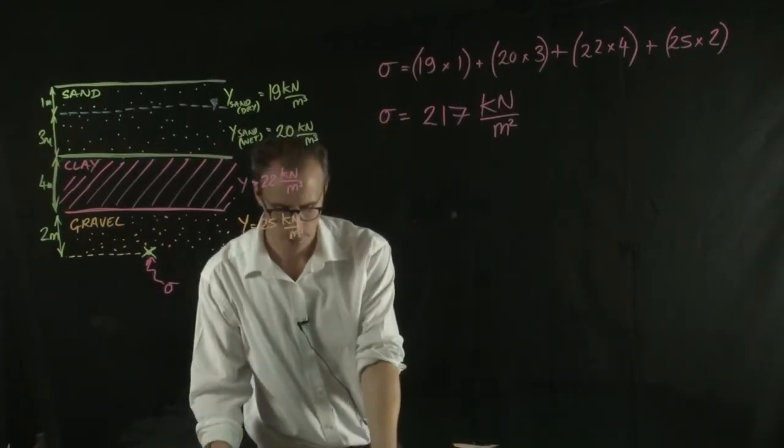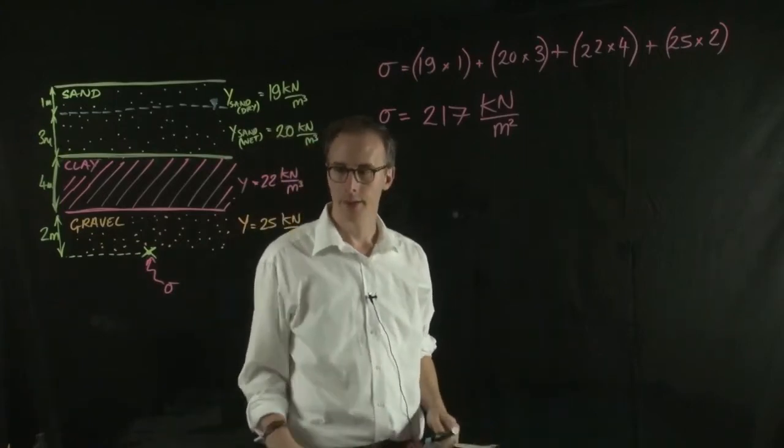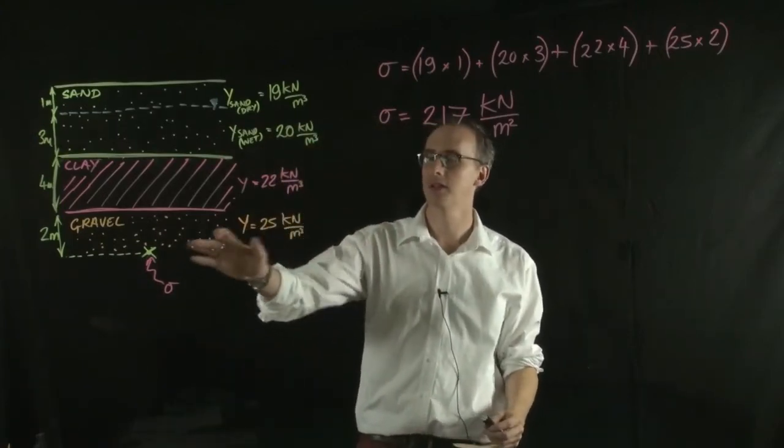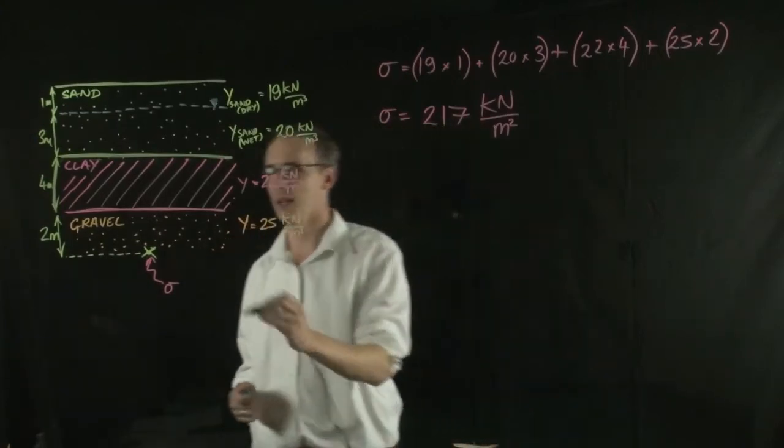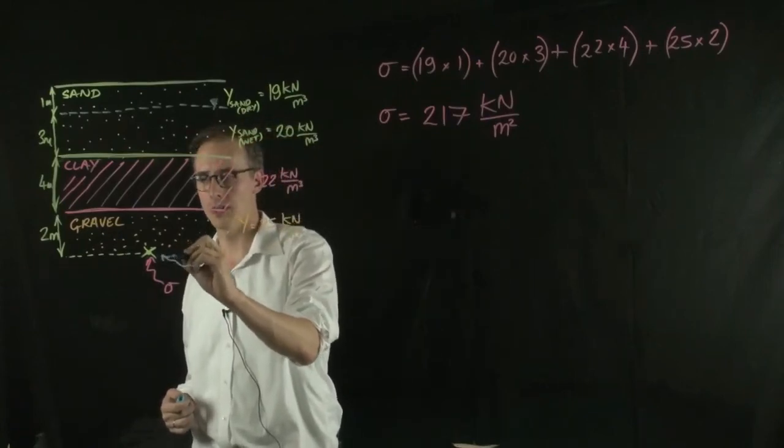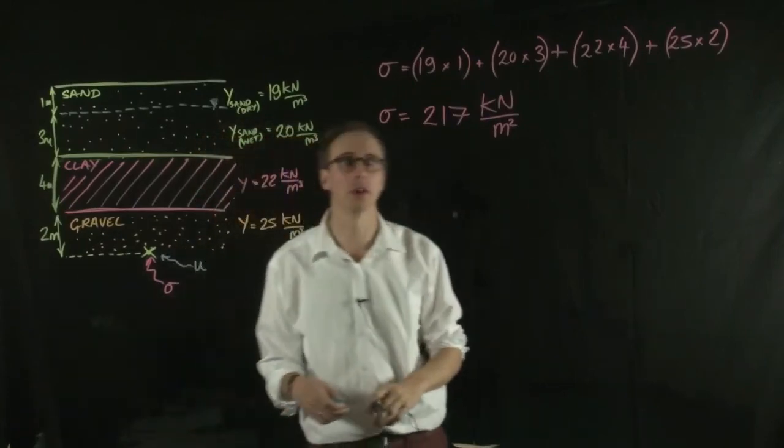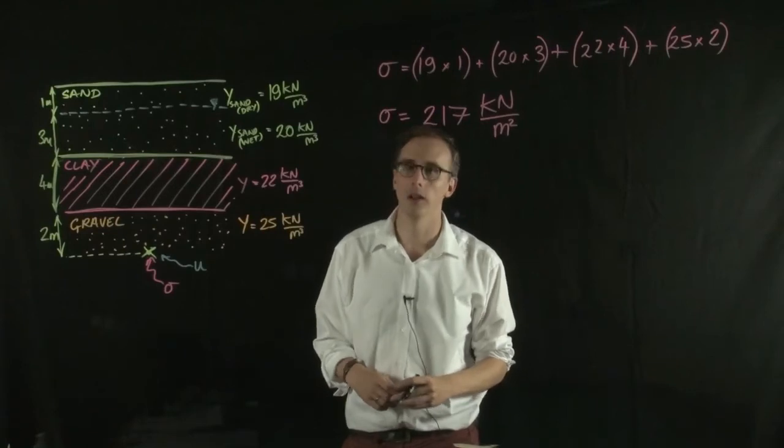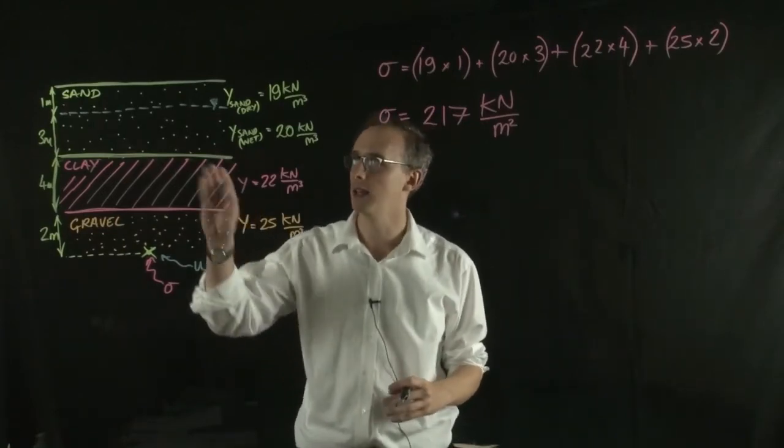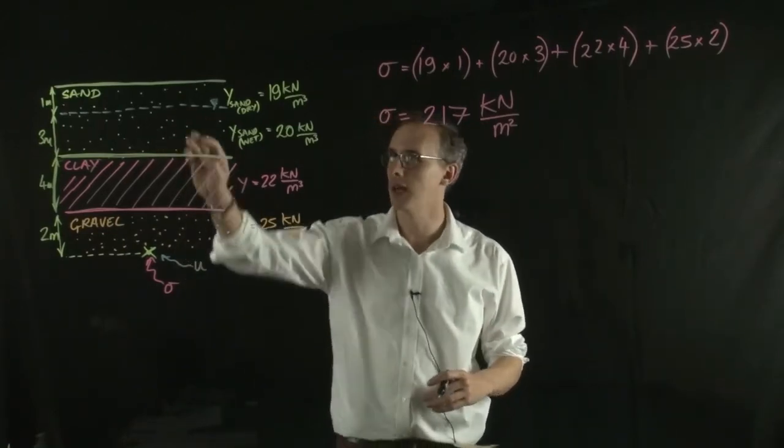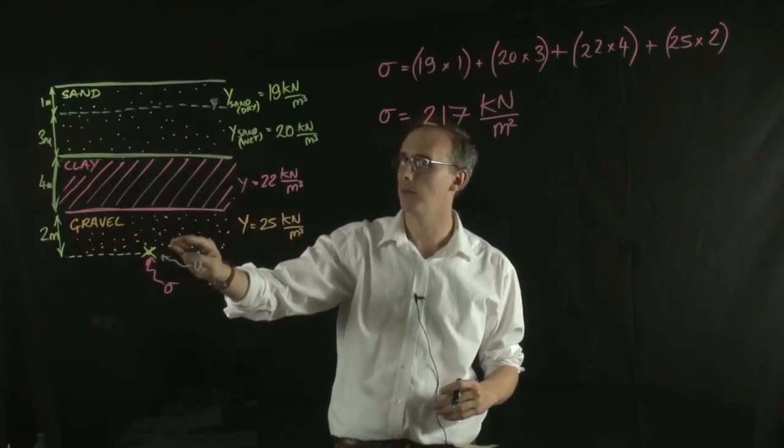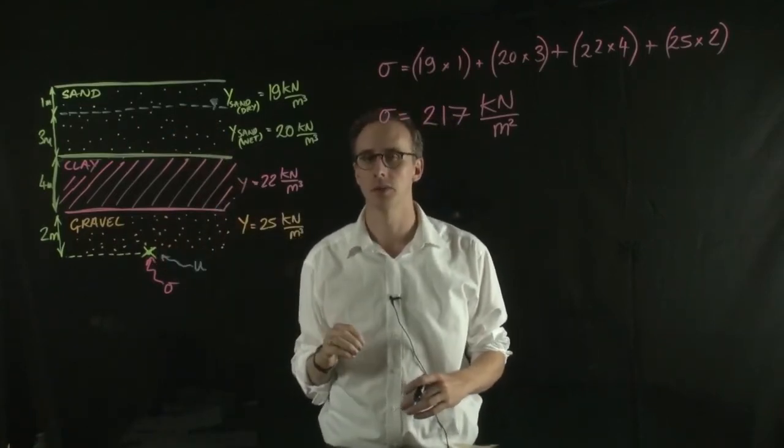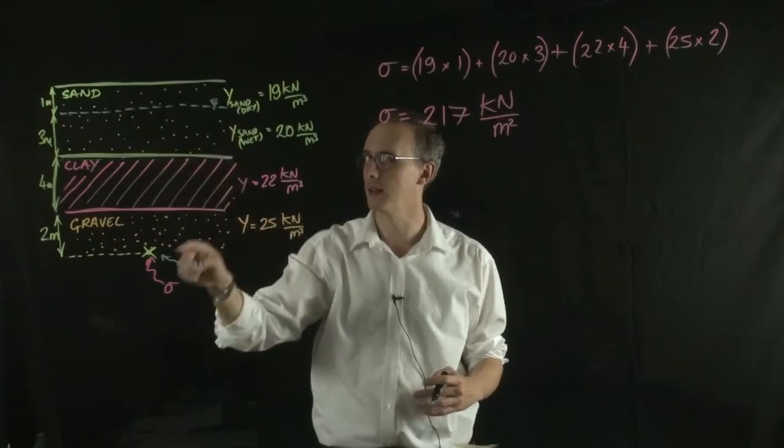Okay. So we found the total stress, what about the water pressure at this point here? So we want to know what the pore water pressure is here. How do we work that one out? Well all we have to do is take the unit weight of water and multiply that by the depth to which our point is below the water table. So our water table is here.